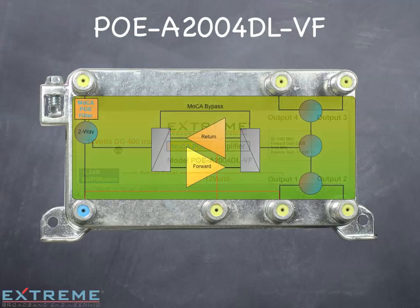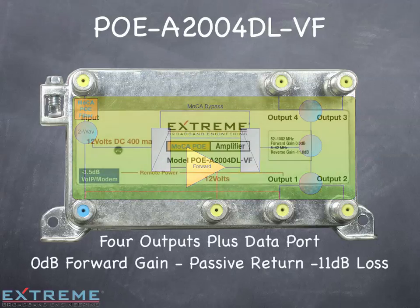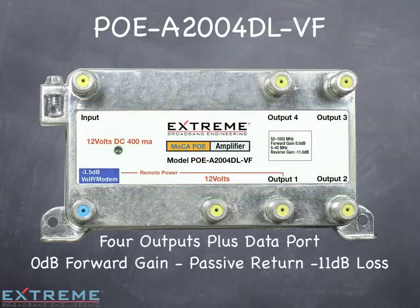The PoE-A2004DL-VF is a four output data plus amplifier with passive return. It has 0 dB of gain in the forward and passive return with 11 dB of loss.